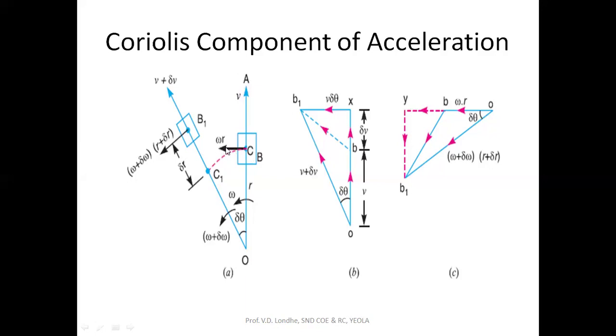The velocity of this point C will be perpendicular to this link length OA, given by R into omega. The slider velocity will be along the link length OA, which is given by V plus delta. The Coriolis component exists where the slider has outward velocity.